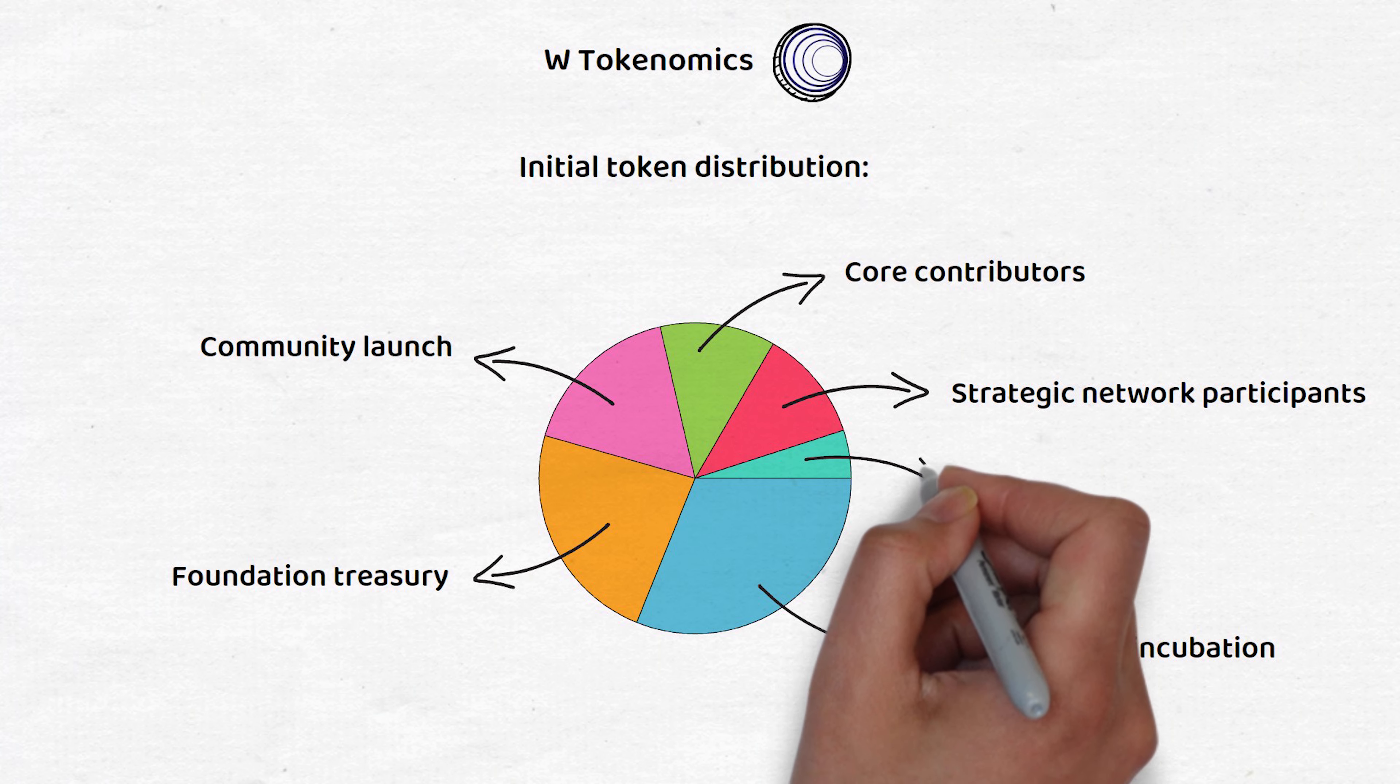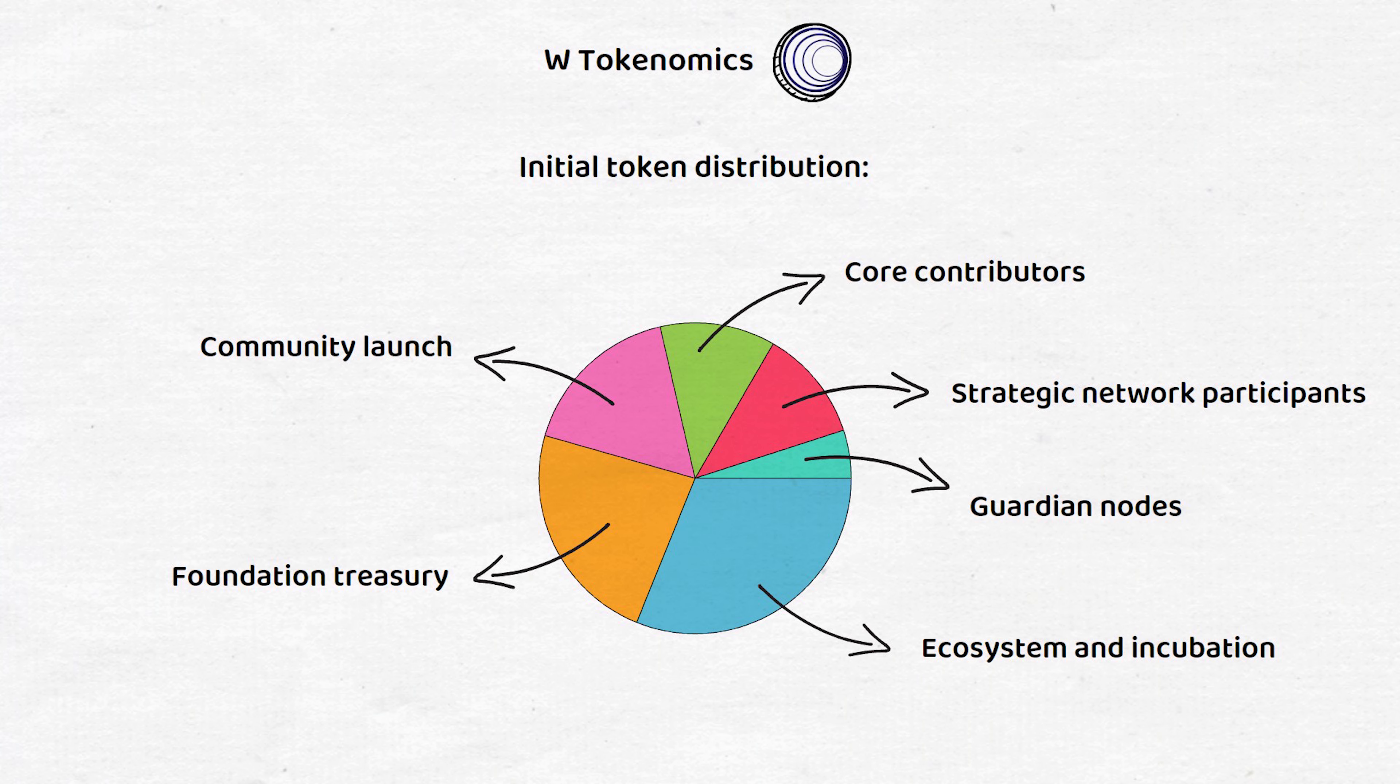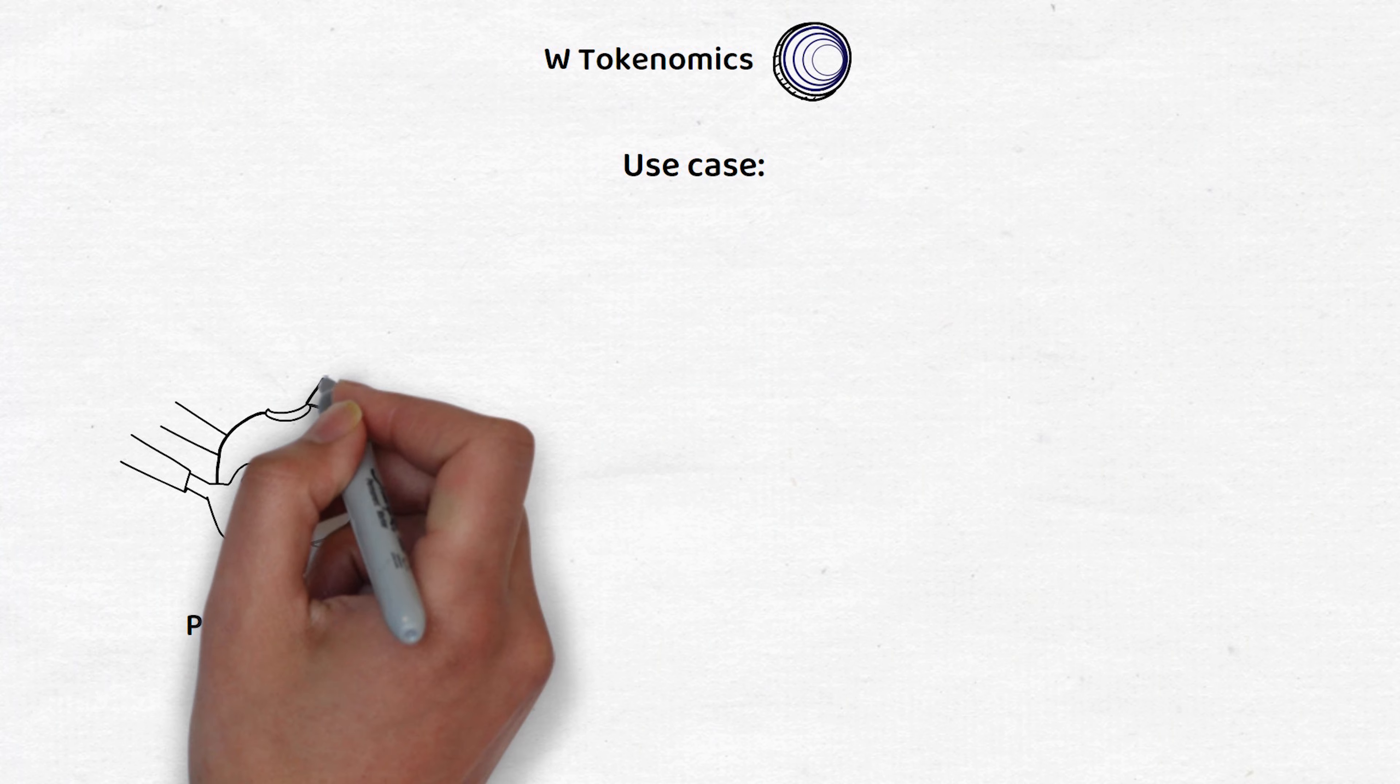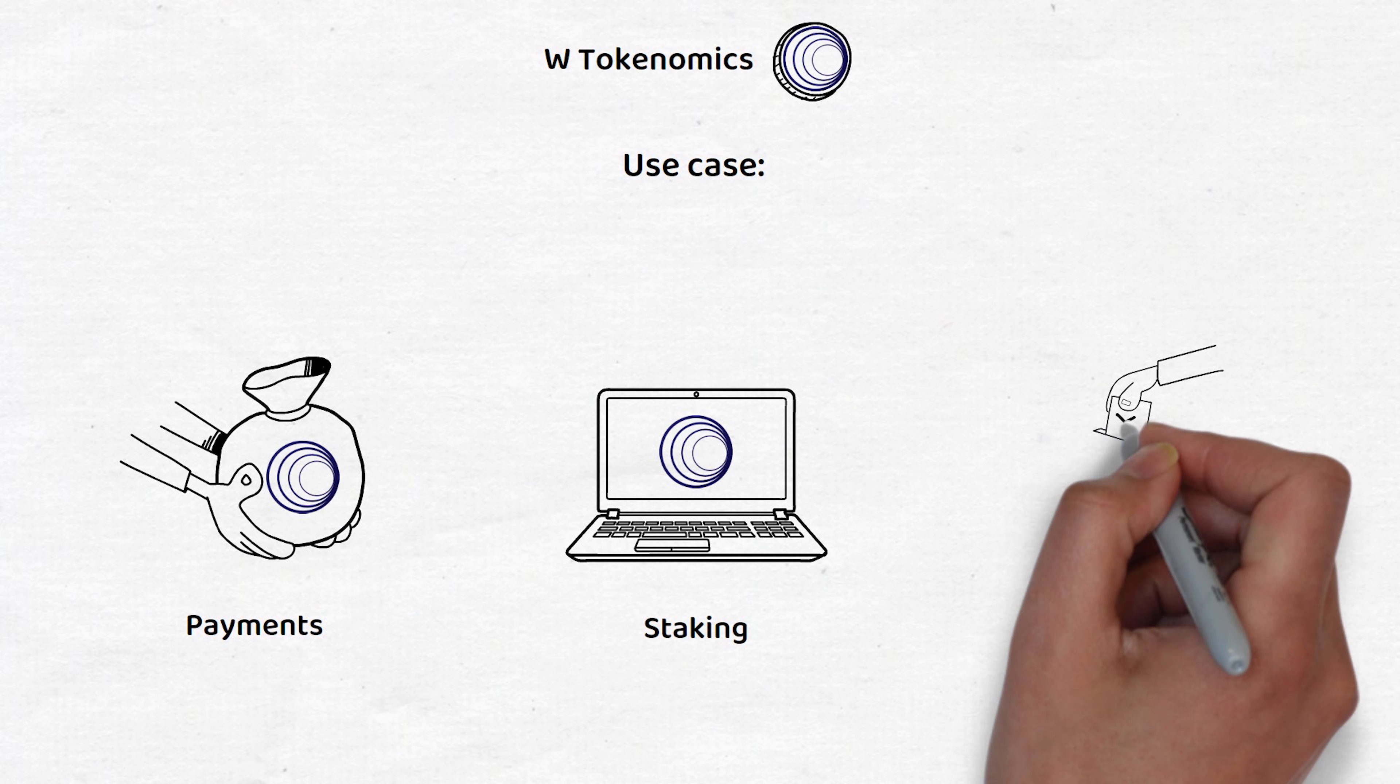And finally, 5.1% to the guardian nodes which verify and secure the network. As is typical for proof-of-stake and proof-of-authority-based platforms, the W token can be used for payments, staking, and governance.